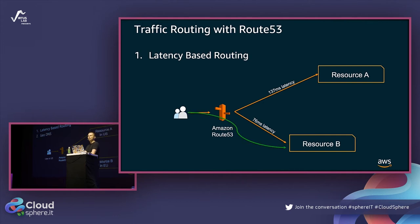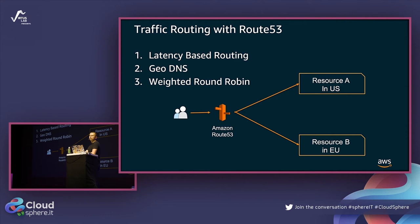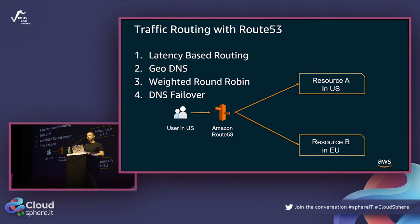Route 53 supports latency-based routing, geo DNS (e.g., if you're in France show this endpoint, otherwise show another), and weighted routing (e.g., send 10% of users here, 90% there). Most importantly, it supports DNS failover: send users to both locations, but if one endpoint goes down, redirect all traffic to the other - even if it's not as close, at least it's working.